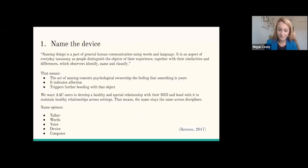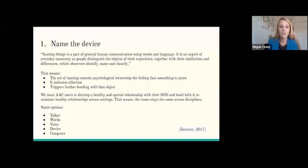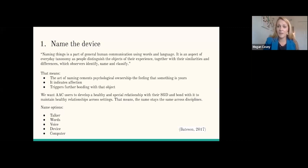Right now, we're talking about naming the device. When we talk about naming the device, I'm going to read this exact definition because I think it resonates with what we're going to discuss. Naming is part of just general human connection, using words and language. It's an aspect of everyday taxonomy as people distinguish the objects of their experience together with their similarities and differences — which observers identify, name, and classify. The act of naming cements psychological ownership, the feeling that something is yours. We often name objects like cars, instruments, boats, cameras — all items that we develop special relationships with and consider extensions of our own identities. It indicates affection, and it triggers further bonding with that object.